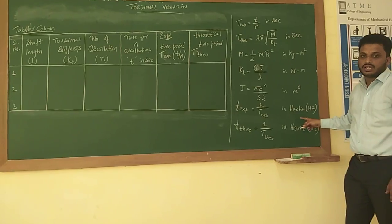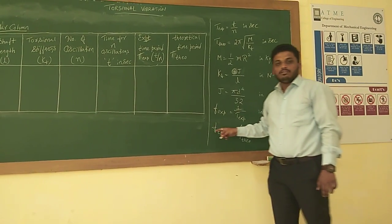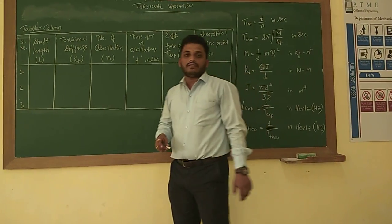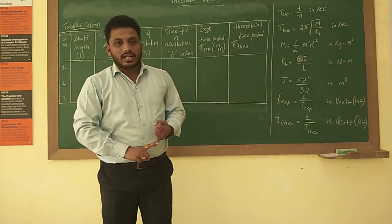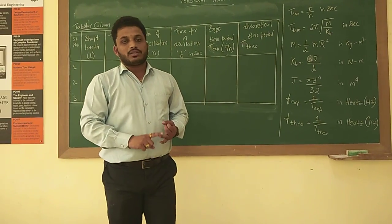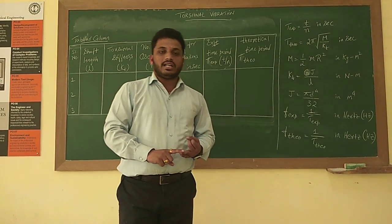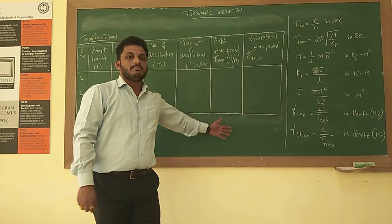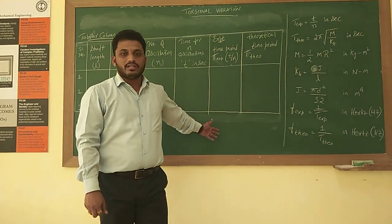The frequency is expressed in terms of hertz. Finally, we calculate the percentage difference: (f_theoretical minus f_experimental) divided by f_theoretical, multiplied by 100, gives the percentage difference.